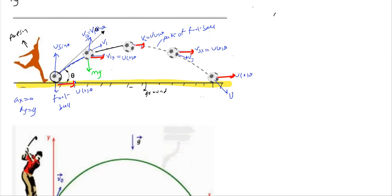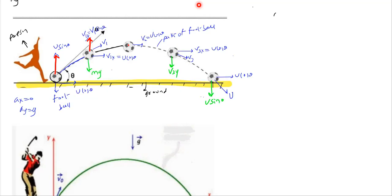This is a very important part of projectile motion. The vertical component of velocity — earlier it was u sinθ, then it becomes v1y or v1 sinθ, then here it will become zero at the highest point, and then it becomes v3y. The vertical component decreases, becomes zero, then increases.